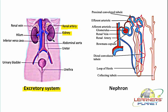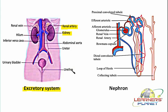The urine produced in the kidney has to be eliminated from the body. That is done with the help of a pair of ureters — tubes arising from the pelvic region of the kidney, connected to the urinary bladder situated in the lower abdomen. Here the urine is collected, and when the bladder is filled completely, this urine is removed out through a small tube known as the urethra.